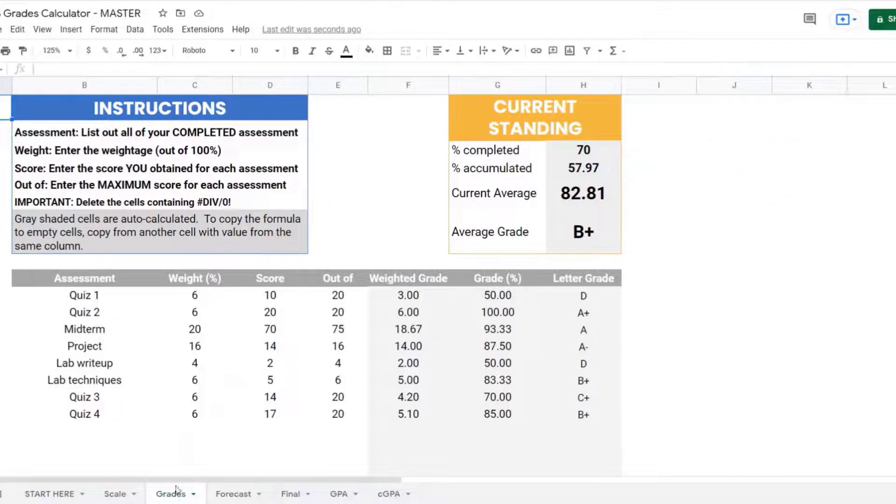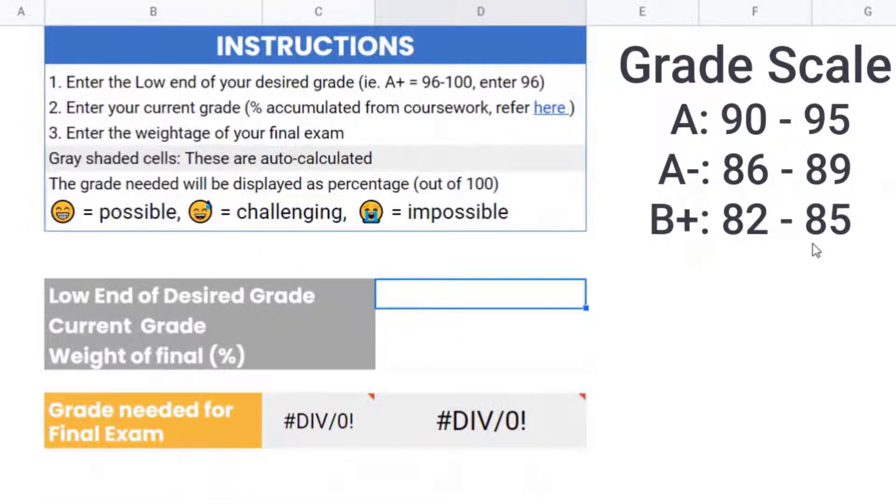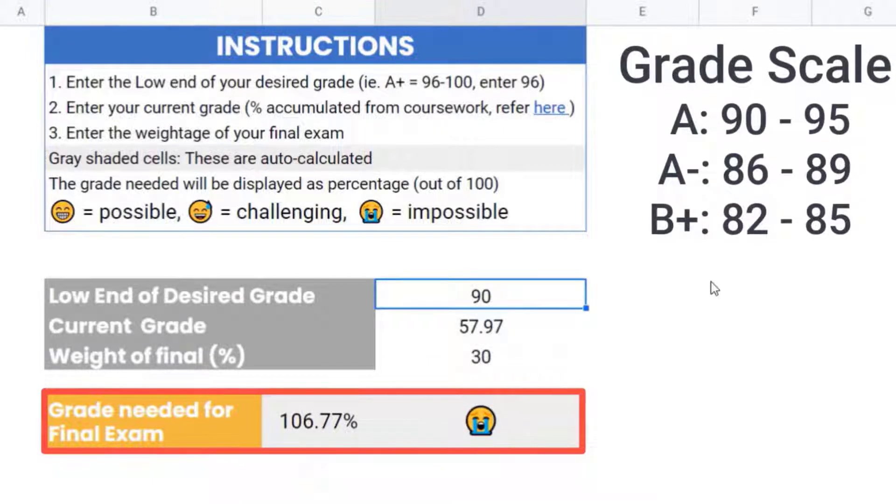Go to the finals spreadsheet and enter the three values. Say you're going for an A. Low end is 90, current grade is 57.97, and weight of finals is 30%. The grade needed for finals is 106.77. That's over 100, which means it's not possible.